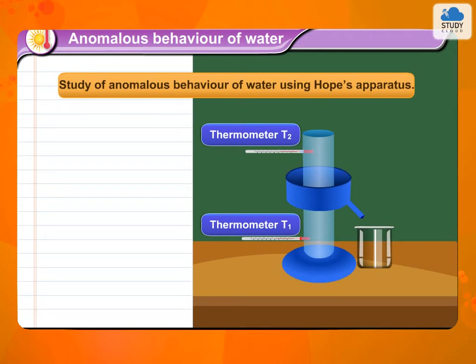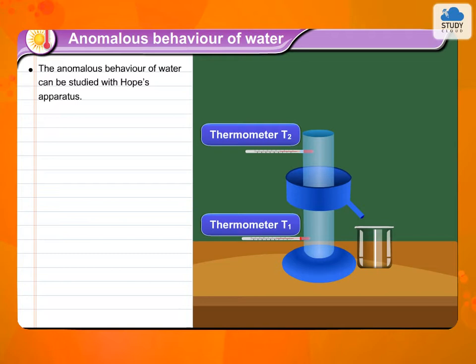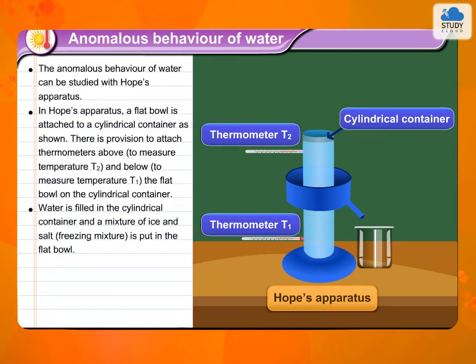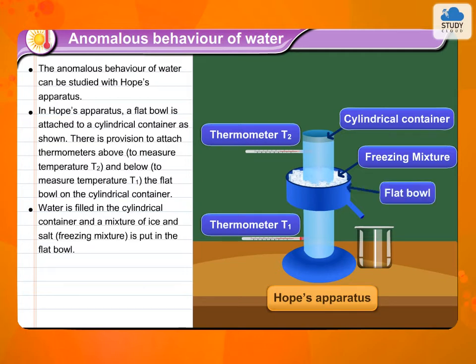The anomalous behaviour of water can be studied with Hope's apparatus. In Hope's apparatus, a flat bowl is attached to a cylindrical container. There is provision to attach thermometers — one above to measure temperature T2 and one below to measure temperature T1. Water is filled in the cylindrical container, and a mixture of ice and salt, a freezing mixture, is put in the flat bowl.